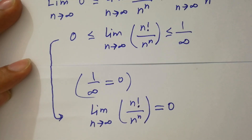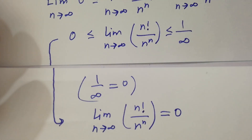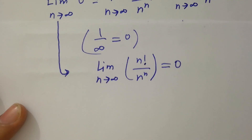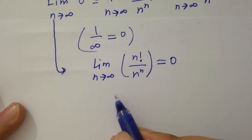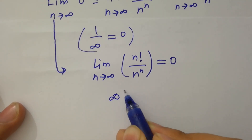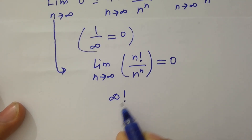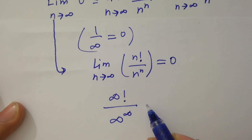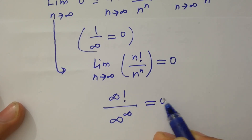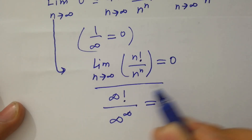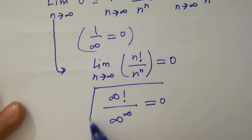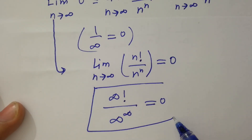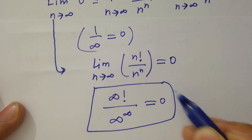So finally, infinity factorial over infinity to the power infinity is equal to 0, which is our final answer.